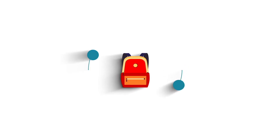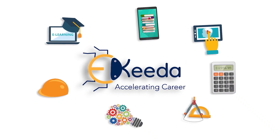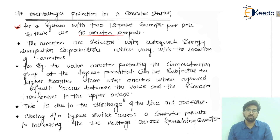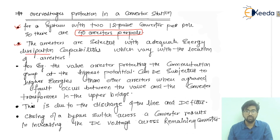For a system with two 12-pulse converters per pole, there are 40 arrestors per pole. So if we are talking about the 12-pulse converter, we are going to have 40 arrestors per pole. The arrestors are selected with adequate energy dissipation capabilities, which vary with the location of the arrestors.